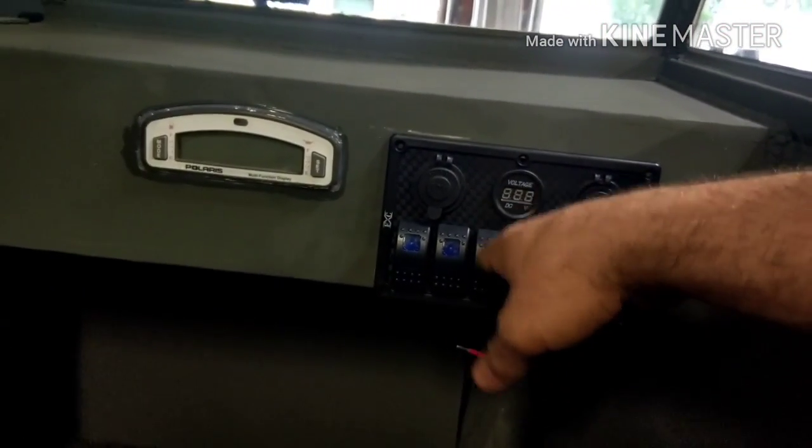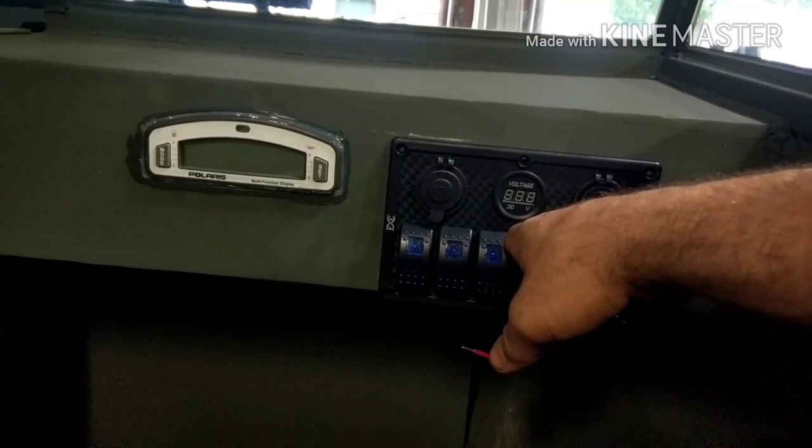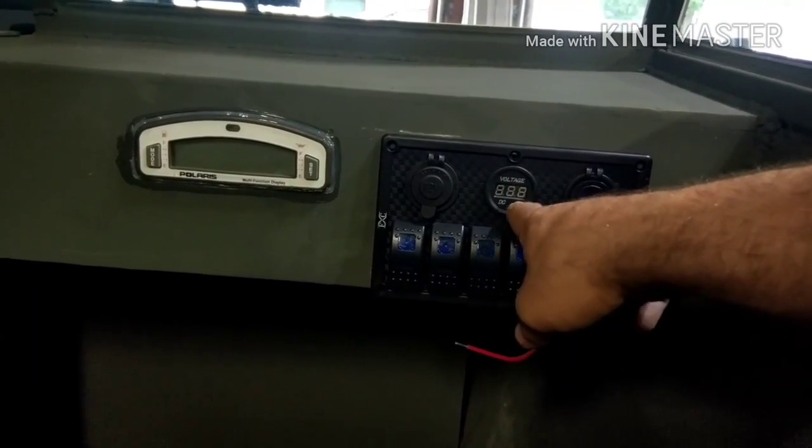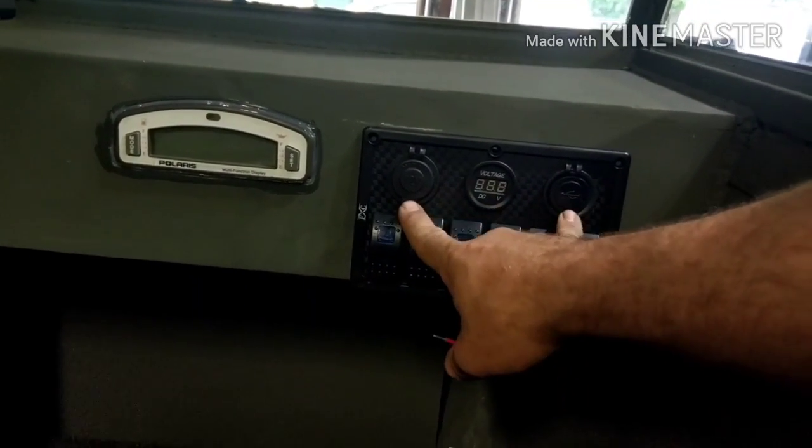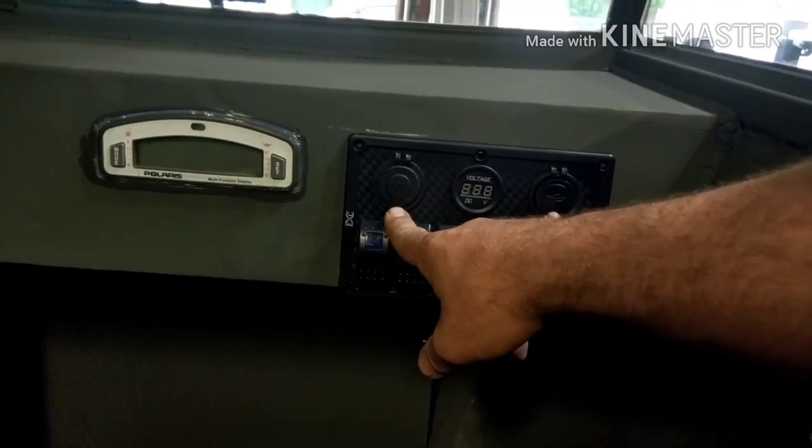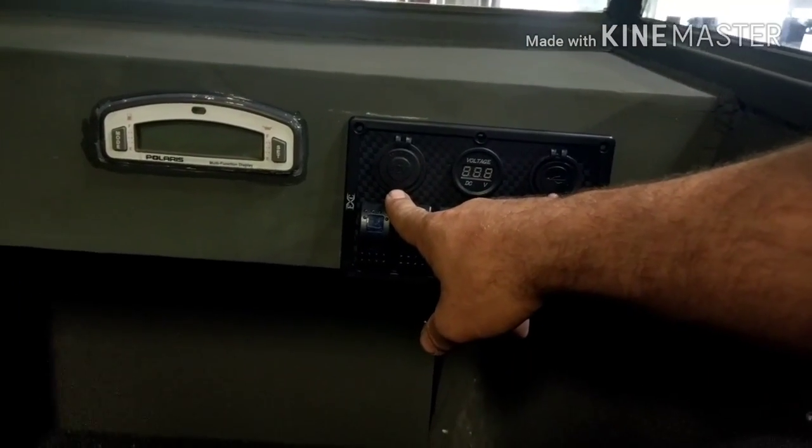Because without that, if you just have this hooked straight to the battery, this voltage meter is always going to be on. Your USB and your cigarette lighter will always be on too, kind of like a leech for the battery.